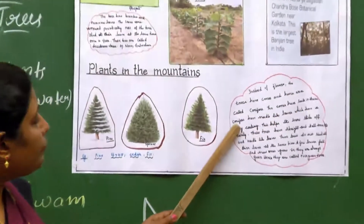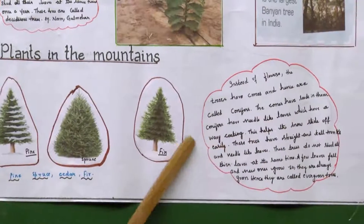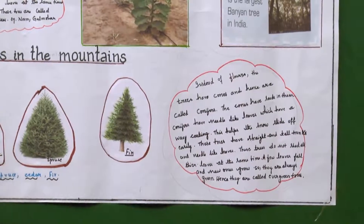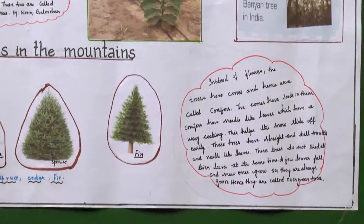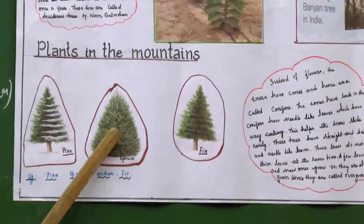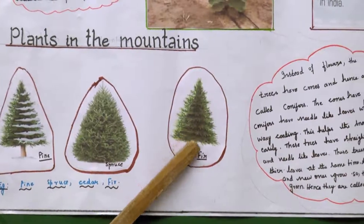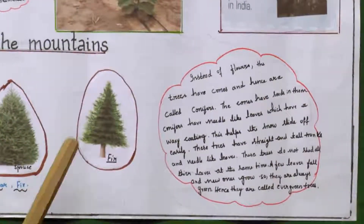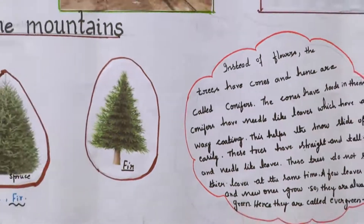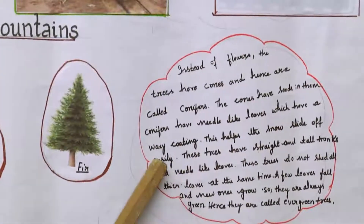The cones have seeds in them. Conifers have needle-like leaves with a waxy coating, which helps snow slide off easily. In the Himalayas and Kashmir, this cone shape allows for easy sliding of the snow.